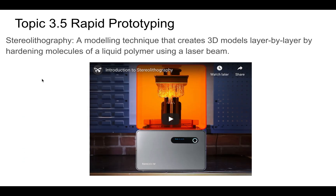This is a manufacturing technique you need to know: stereolithography. This is an additive process where you shine an ultraviolet laser into resin, and at a specific point it will harden. Then you pull it out of the material. This video is a good introduction to what they're doing with this type of manufacturing process.